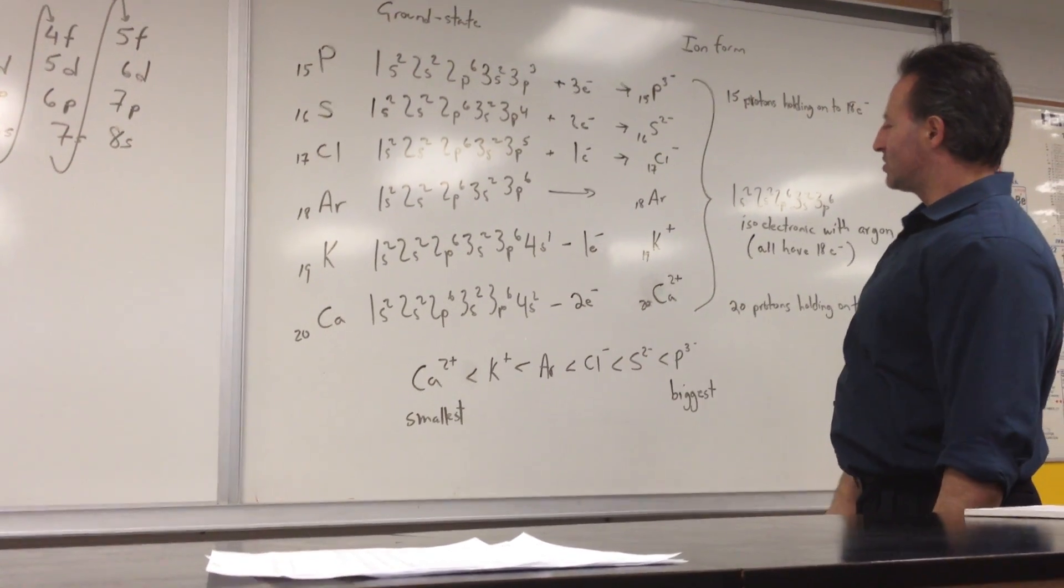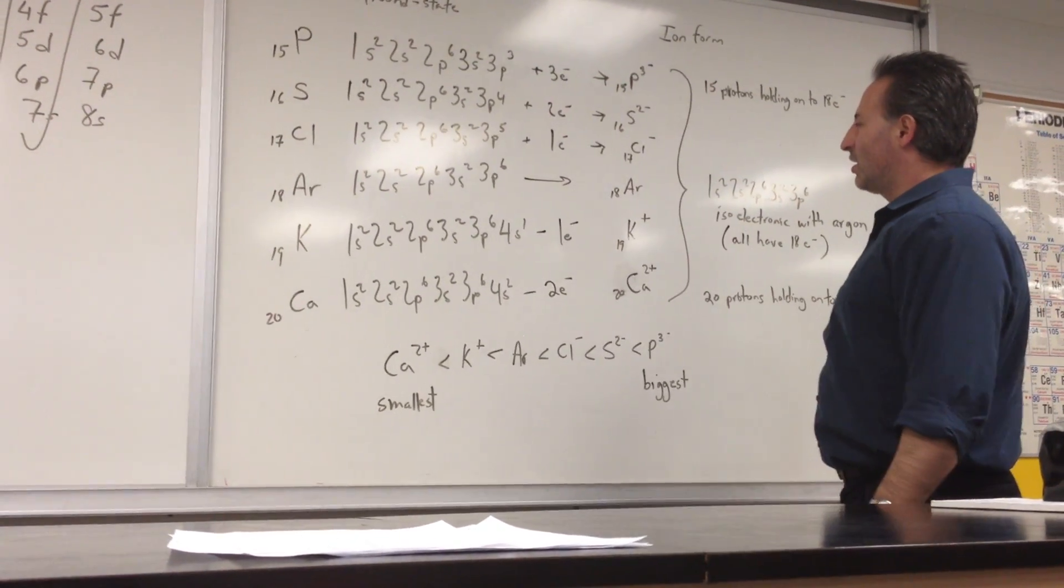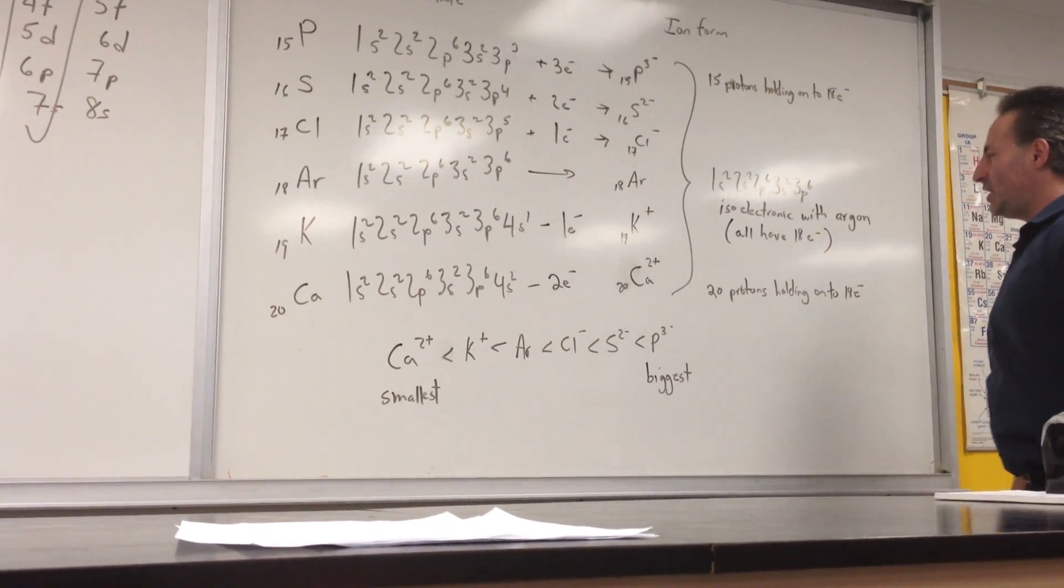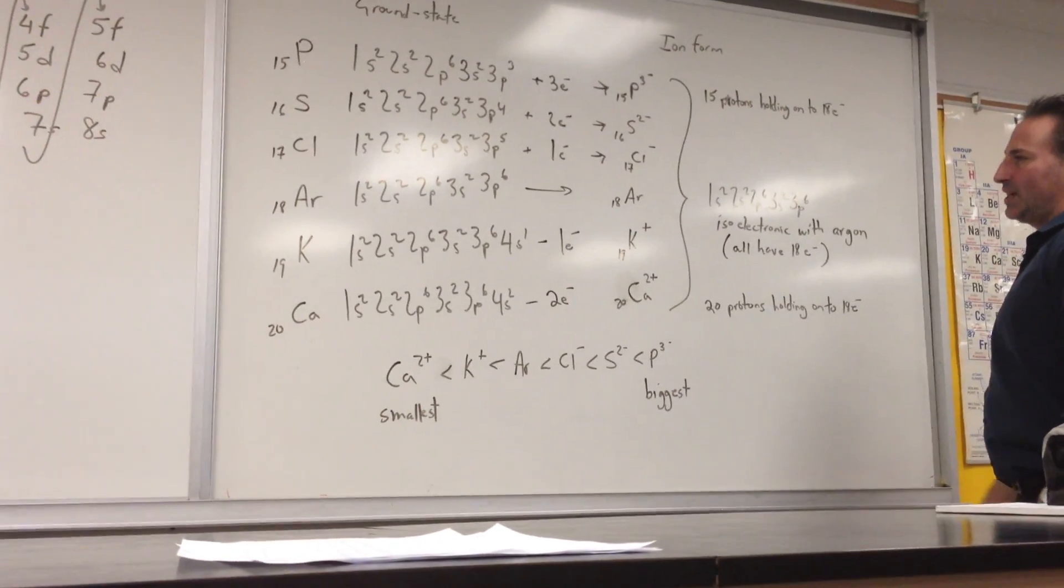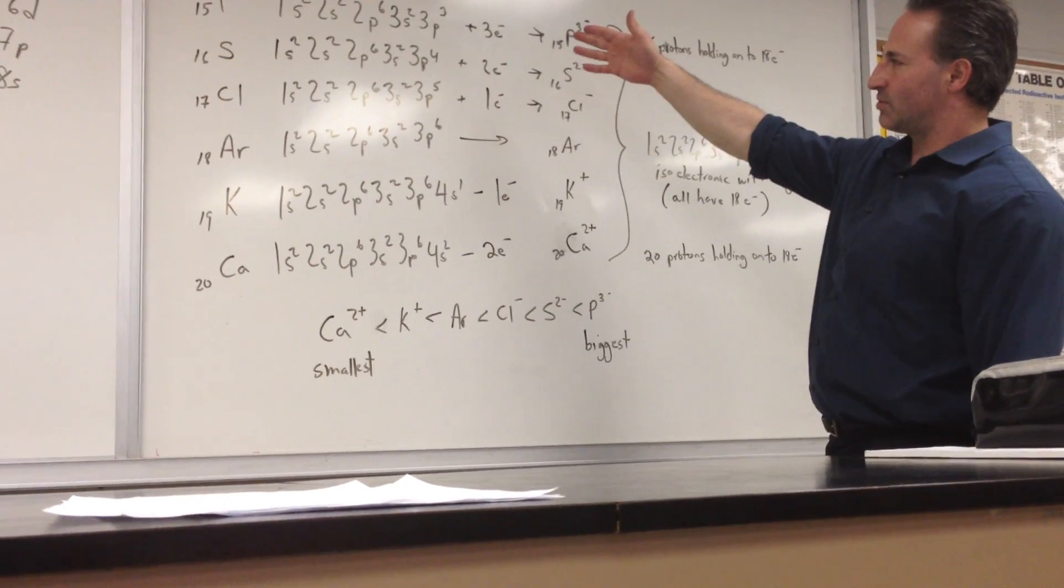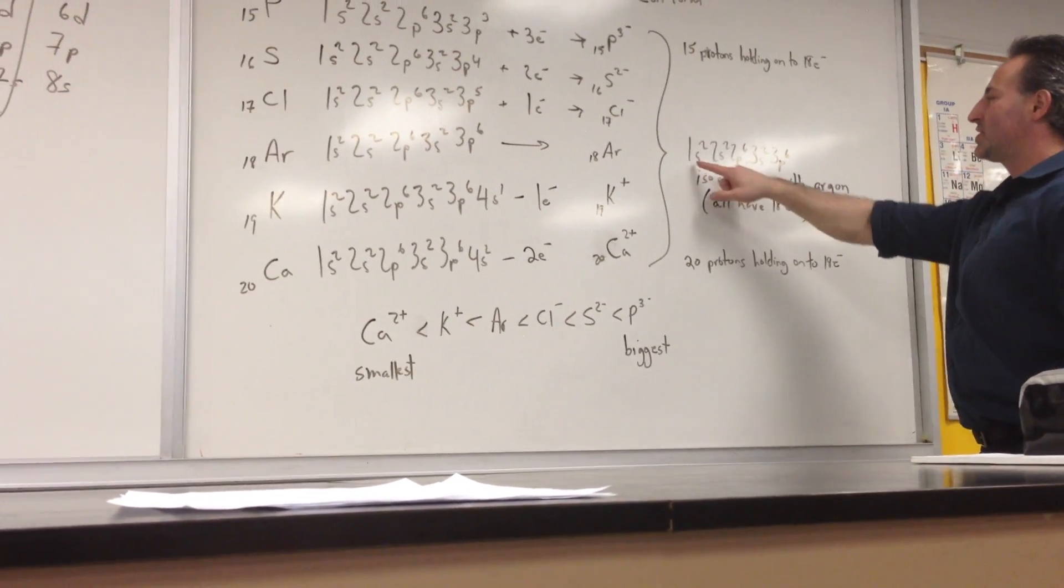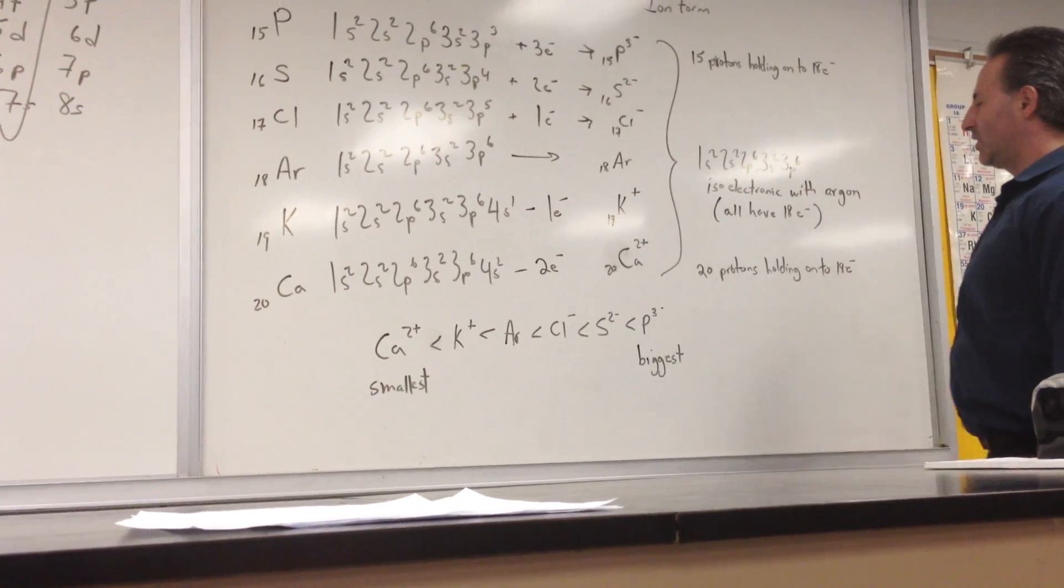The end result is you have five cations that are isoelectronic with argon, meaning they each have the same number of electrons, 18 electrons. All five of those two cations and three anions all have 18 electrons, and they all have the same electronic configuration, just like argon.